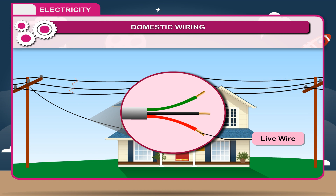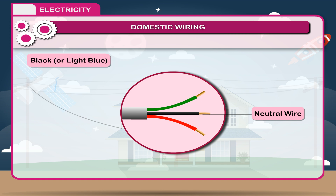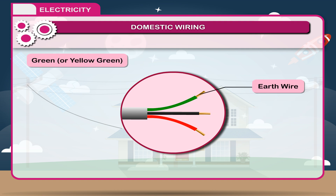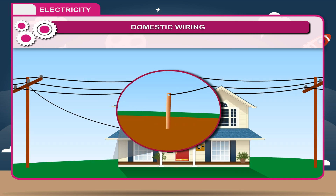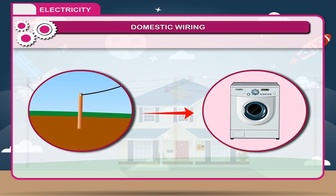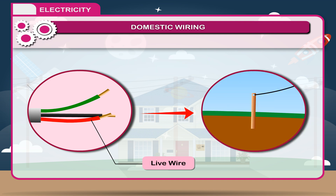The live wire is red or brown in colour and brings current. It is dangerous to touch the live wire with bare hands. The neutral wire is black or light blue in colour and is used as the return wire. The third wire, green or yellow-green in colour, is the earth wire. It may be taken from a pole or a metal plate sunk deep in the earth, and is a safety measure that does not affect the supply. Earth is usually connected to the body of electrical appliances, so that if the live wire incidentally touches the body, the earth wire sends the current from the body to the earth.